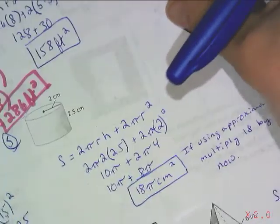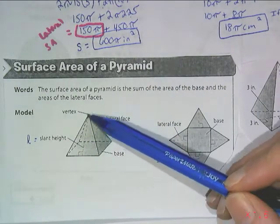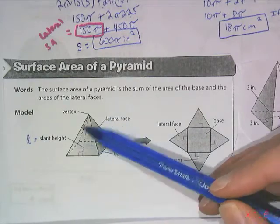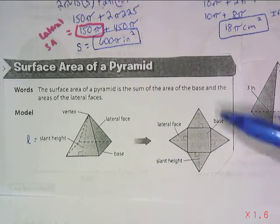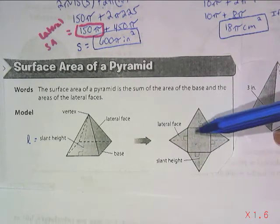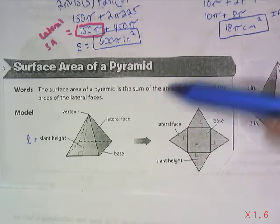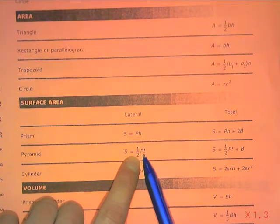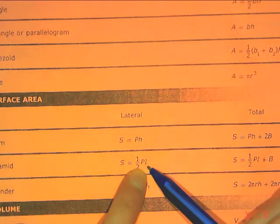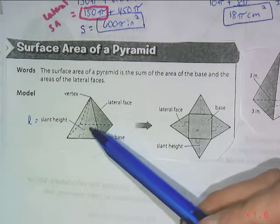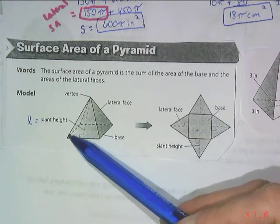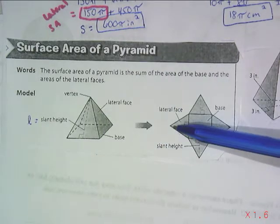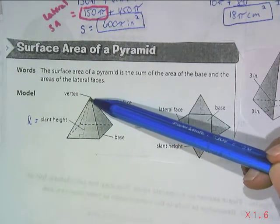Now we're going to look at the surface area of a pyramid. The vertex is directly above the one base, and all lateral faces on a pyramid are triangles. If you looked at this as a net, you'd have one base plus all the triangles. The formula uses big P — the perimeter of the base — times the slant height L, which is the height of each lateral triangular face, perpendicular to the base of that triangle. The slant height goes on the side of the figure, not from the center to the vertex — that would be the height of the figure.